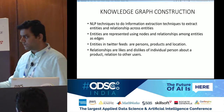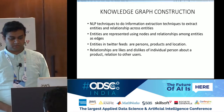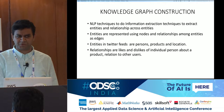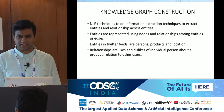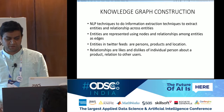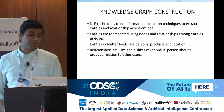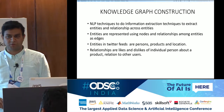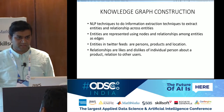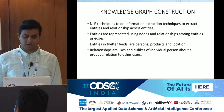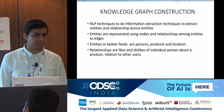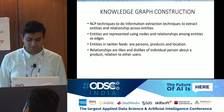We looked at Grakn.ai — the most advanced open-source graph database available — but ultimately used Neo4j, which solved the problem for us. Neo4j has its own limitations: it's a unidirectional graph and you can't model bidirectional relationships. But for our use case, Neo4j was much better.